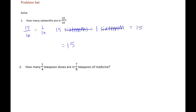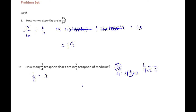Number 2: how many 1/4 teaspoon doses are in 7/8 teaspoon of medicine? We have 7/8 and we want to see how many 1/4 teaspoons are in there. The first thing we need to do is find a common denominator by listing the multiples of 8 and 4. I can leave 7/8 alone and convert 1/4 into 8ths — times 2 over 2 — that gives us 2/8. So we have 7/8 divided by 2/8.